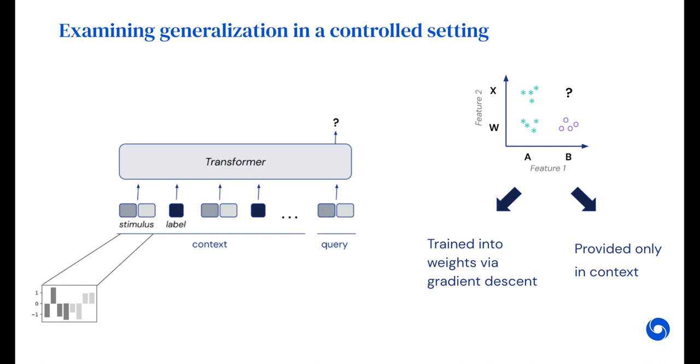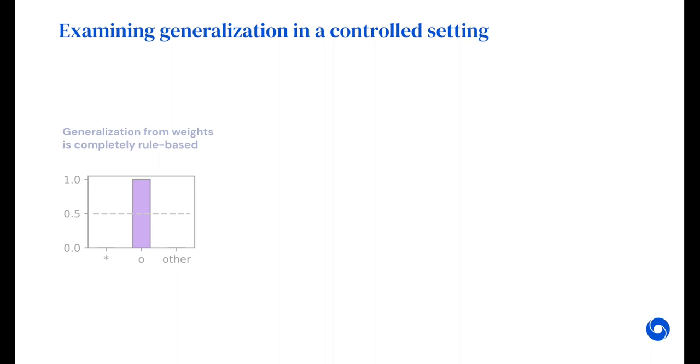We examined these biases in a controlled setting, using a transformer that is trained from scratch. Here, feature 1 and feature 2 are random subvectors that are concatenated together. In this setting, we found that generalization from in-weights information was completely rule-based.